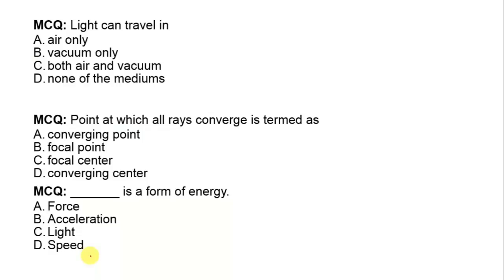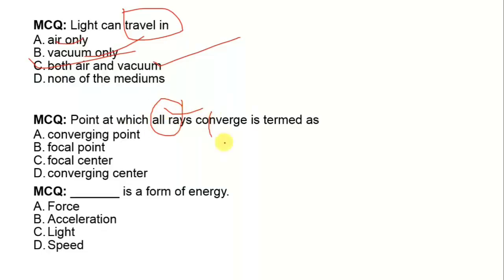Next question: light can travel — answer: light index. Next question: point at which all rays converge — answer: focal point. Next question: light is a form of energy — answer: light is a form of energy.